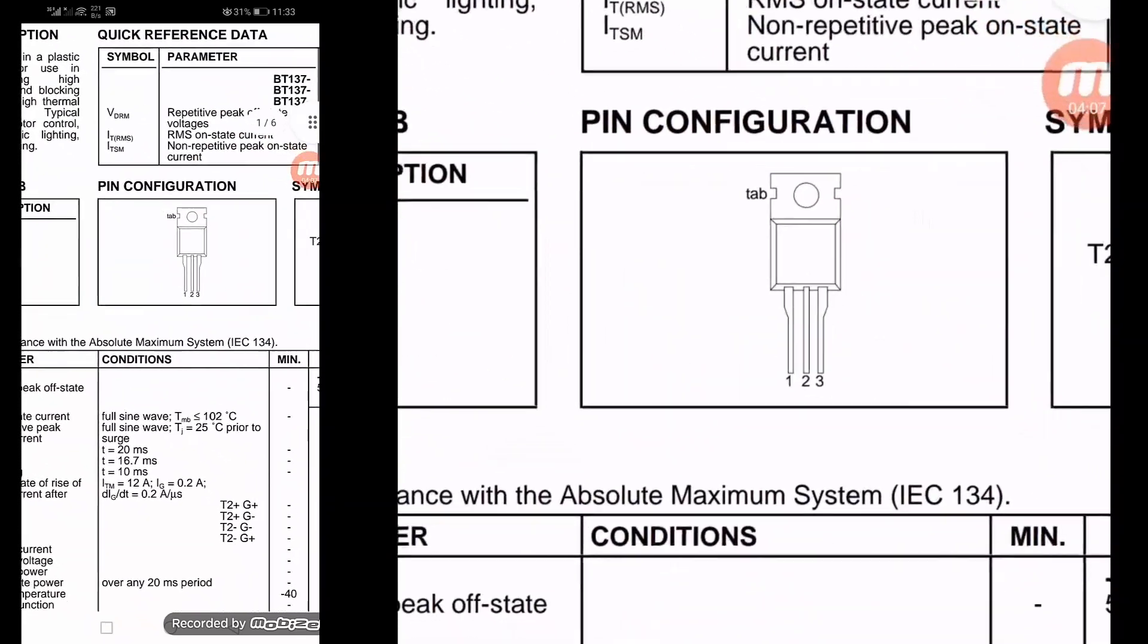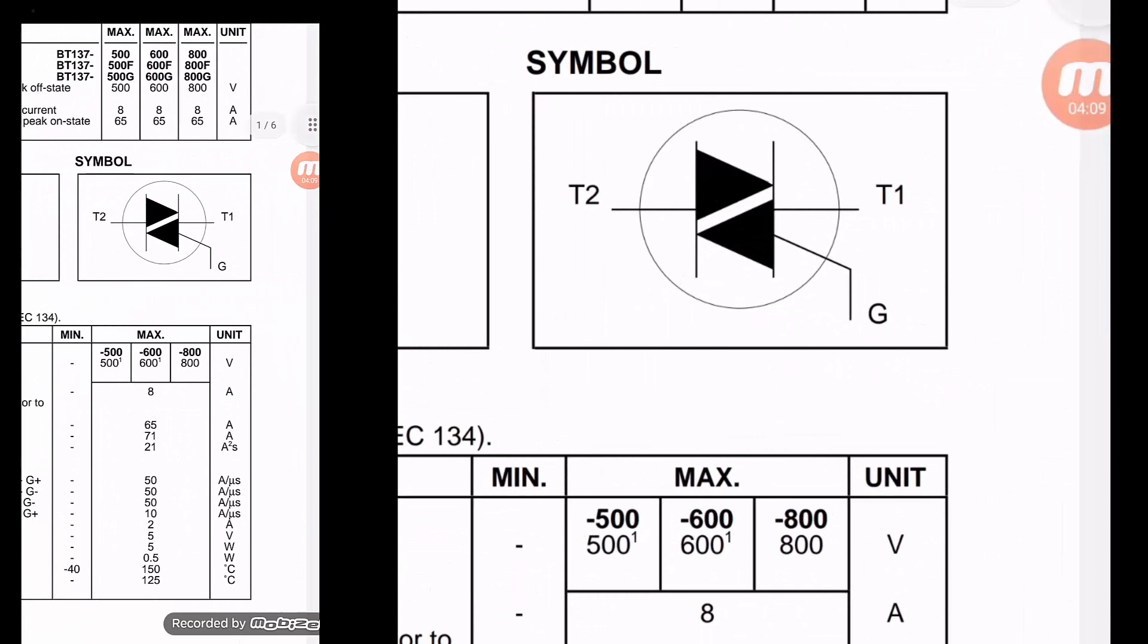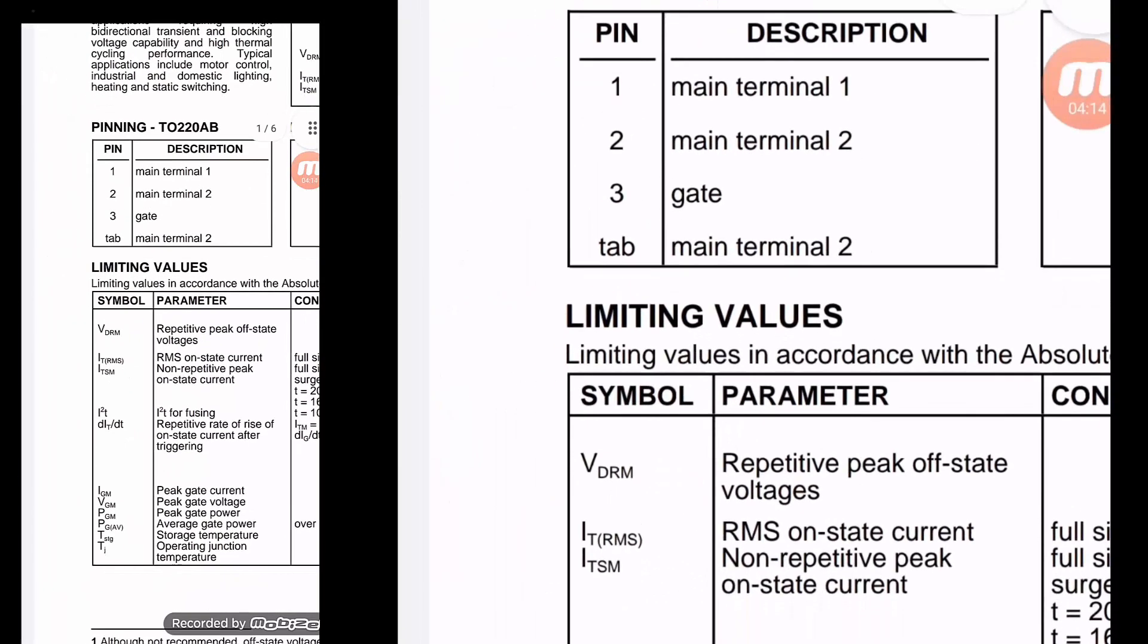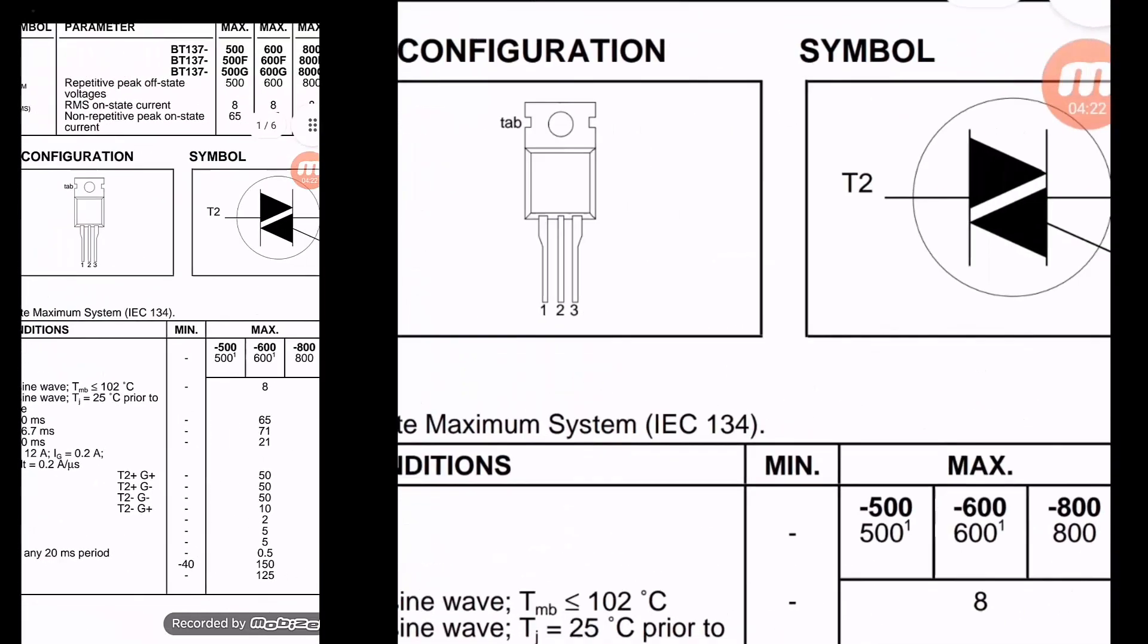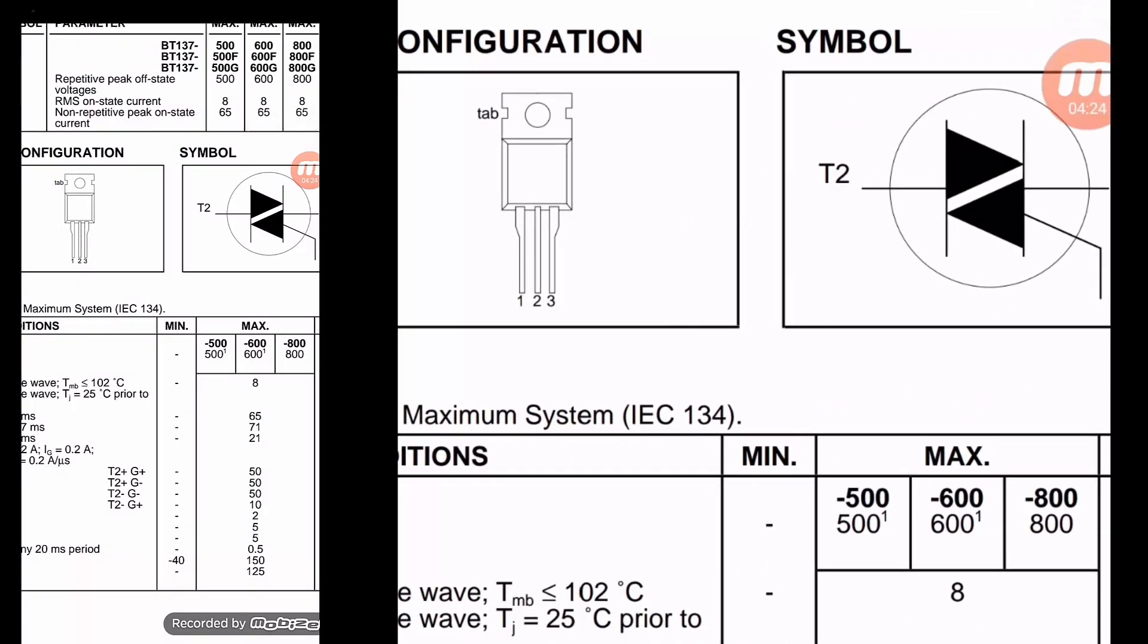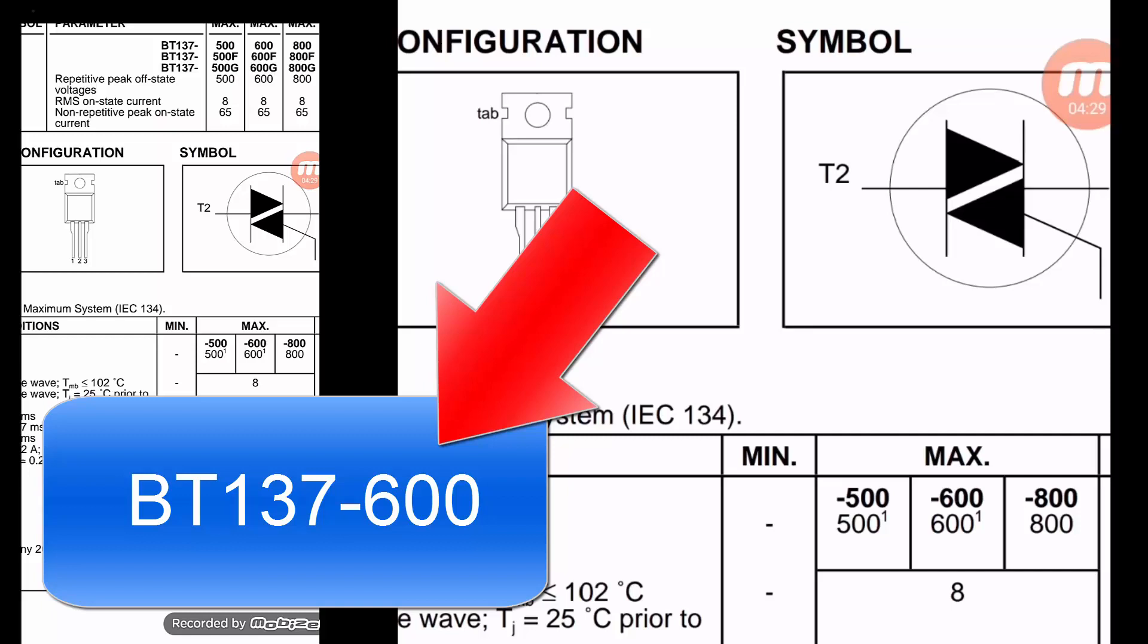We have to know something. The first, VDRM, that is repeated peak off-state voltage. When it is not conducting, how much voltage it can sustain. So in our case it is dash 600, so 600 volts.